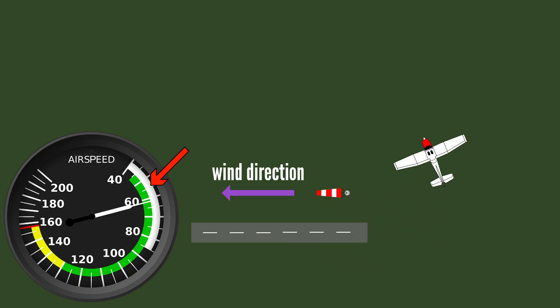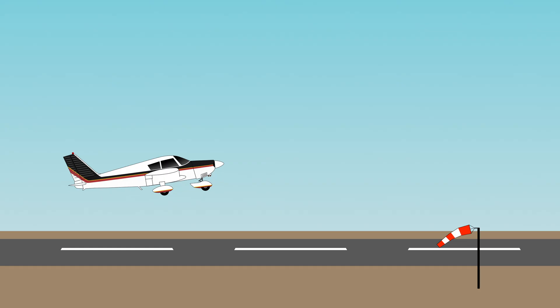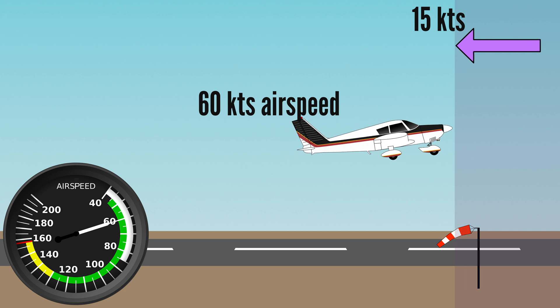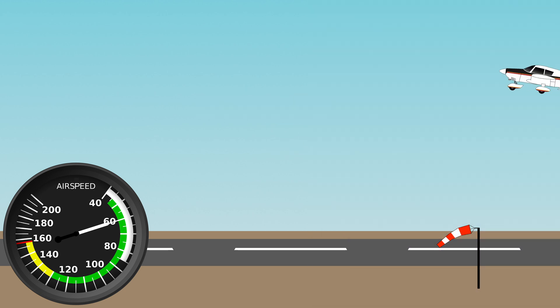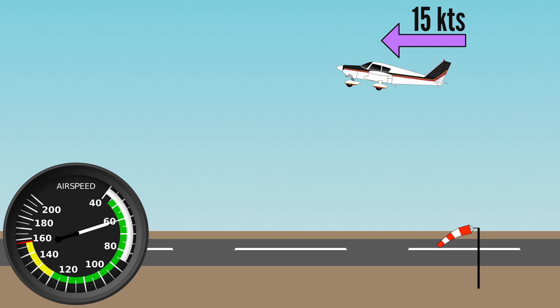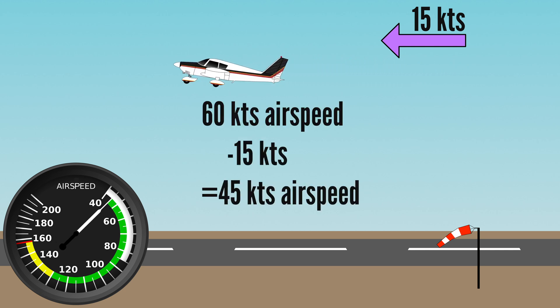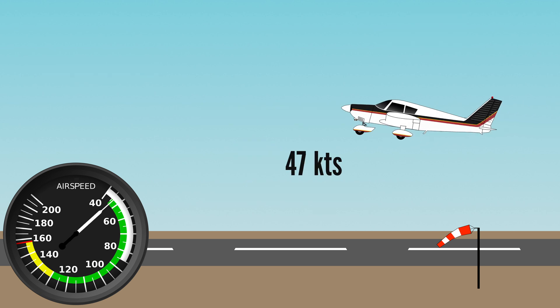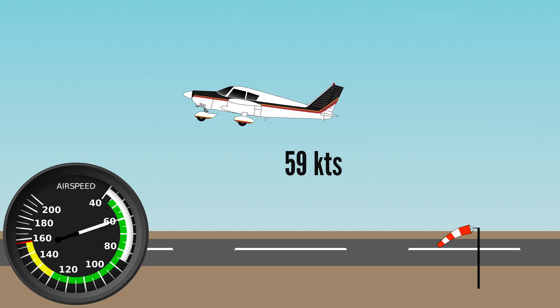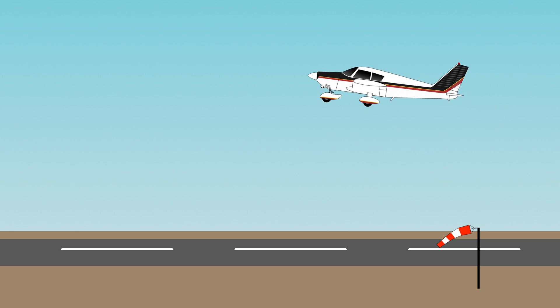Although the downwind turn myth has been debunked, every so often it comes up again. It goes like this: after takeoff, when turning your airplane downwind, it will momentarily lose airspeed due to its inertia. For example, you're climbing at 60 knots airspeed into a 15-knot headwind. When you turn downwind, you suddenly have 15 knots of wind from behind, lowering airspeed from 60 knots to 45 knots momentarily. It will take a few seconds for the plane to accelerate back to 60 knots, and in those few seconds the plane goes into a stall. But this theory relies on the fallacy that an airplane's ground speed plays a role in aerodynamics, which it does not.